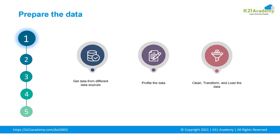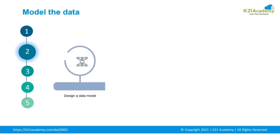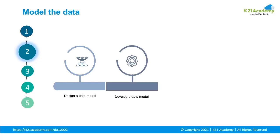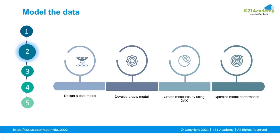Modeling the data is the second domain of this DA100 exam. When modeling data, the one thing we need to keep in mind is efficiency. Here, we will first design a data model, then develop a data model. We will also make use of DAX — Data Analytical Expressions — a library full of operators and functions to create measures. During modeling the data, you must have the capability to optimize model performance to make the best results. Since modeling the data holds the highest weightage in the exam, it becomes very important to learn about it and pay attention to it.